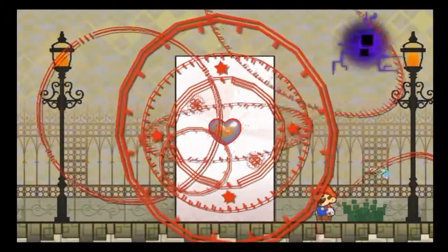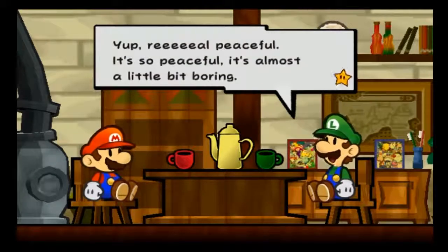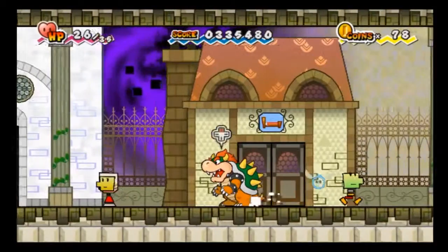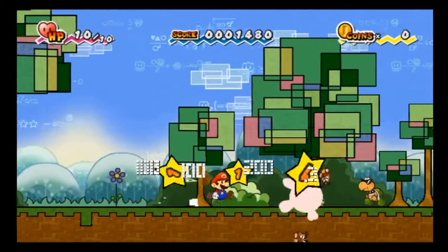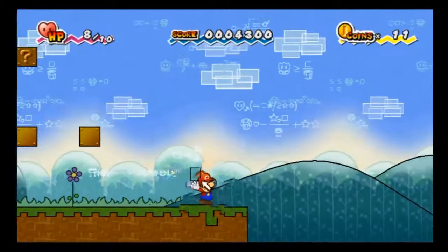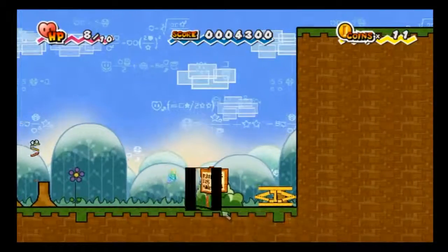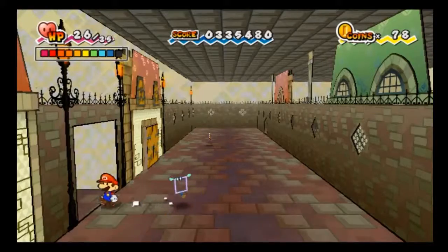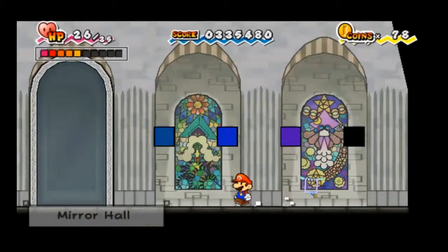Super Paper Mario, released in 2007, is the third entry in the Paper Mario series of role-playing games. Unlike the previous two titles which featured turn-based combat, Super Paper Mario features more action-platformer-oriented gameplay and a 2D game world that can be flipped into 3D, revealing secrets and hidden passages not normally visible to the player.